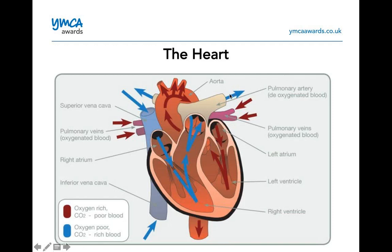The pulmonary artery takes deoxygenated blood to the lungs, where it produces oxygenated blood. The blood goes through what we call gaseous exchange, where the exchange of gases happens via the alveoli, and we get oxygen-rich blood from the pulmonary veins. It goes back through the pulmonary vein, comes down through the left atrium, into the left ventricle, and pumps out of the aorta — A for arteries, A for away — and goes back out to the body.